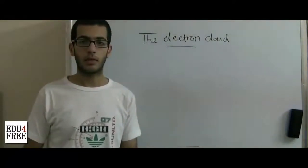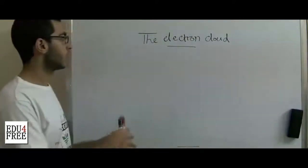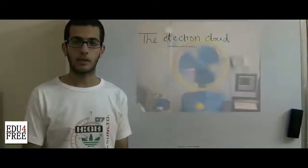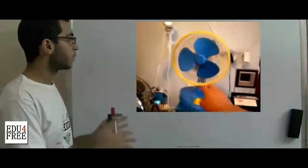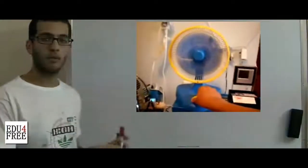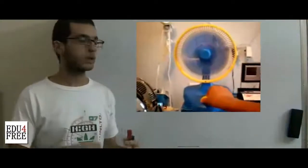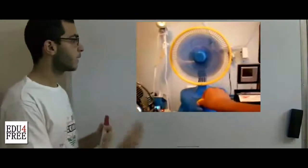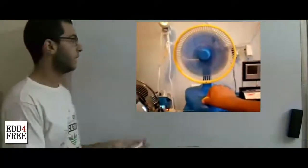The concept of the electron cloud is very similar to watching a fan rotating. At first, when the fan begins rotating, we can define the shape of each blade of the fan. But as time goes on, its speed becomes more rapid and we cannot define any of these blades.